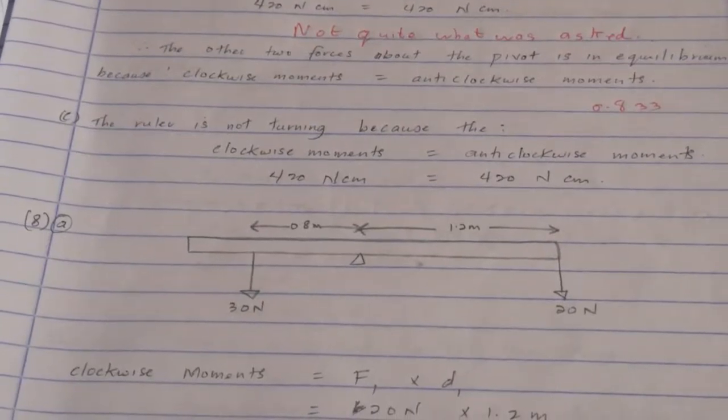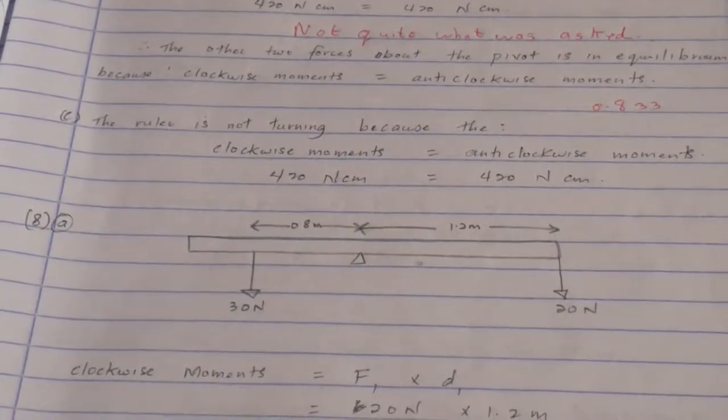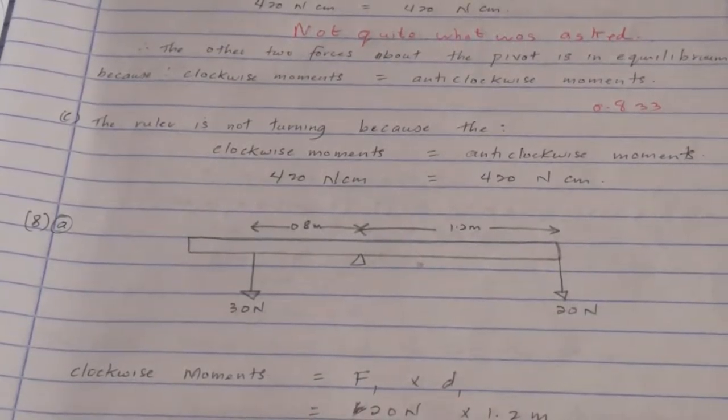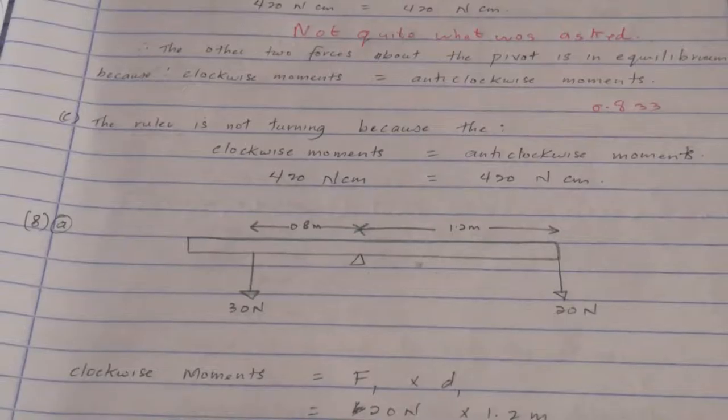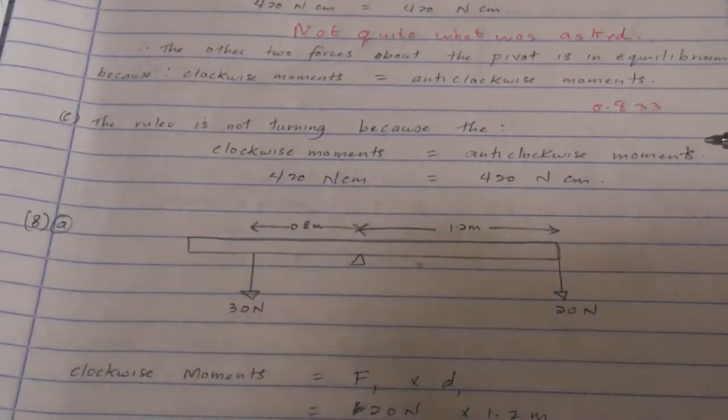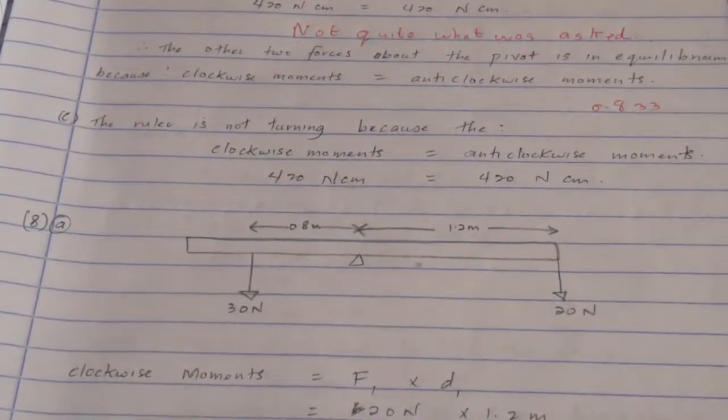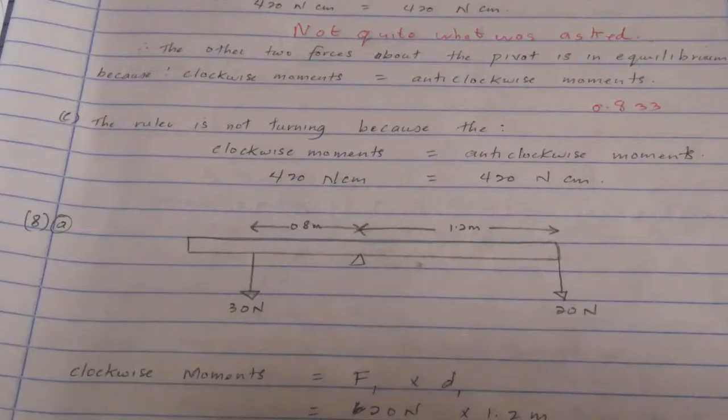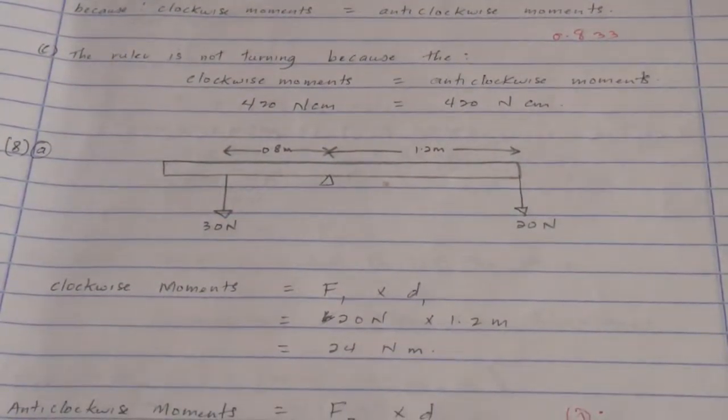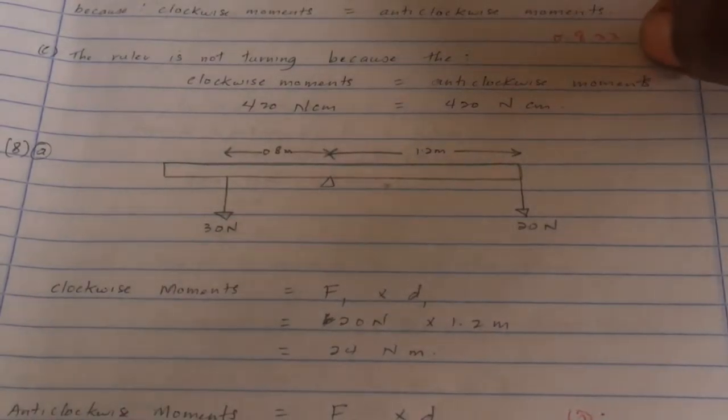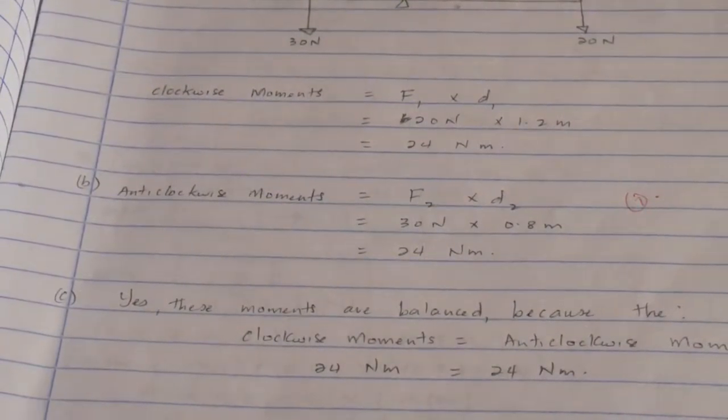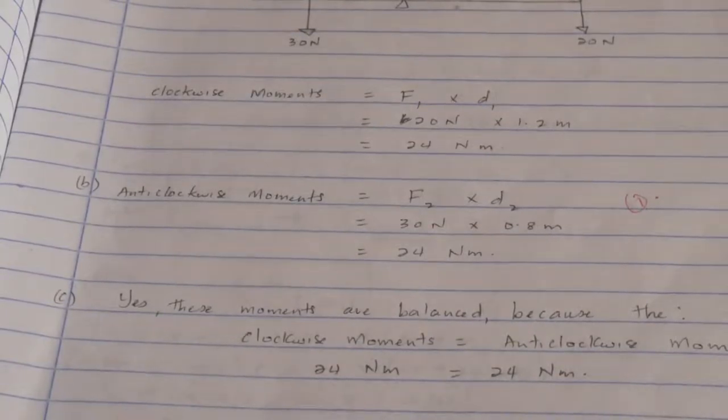Right, number eight. The diagram shows a horizontal beam pivoted at its midpoint with two downward forces acting on it. Which force is tending to turn the beam clockwise? Calculate the moment of that force. Well, of course, the 20 newton force is tending to turn the beam clockwise since it is acting down on the right hand side of the pivot. The moment is force times distance, which is 20 newtons multiplied by 1.2 meters, which is 24 newton meters. Anti-clockwise moments calculated in similar manner.